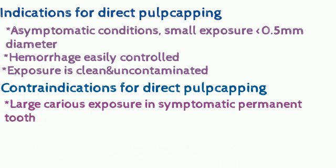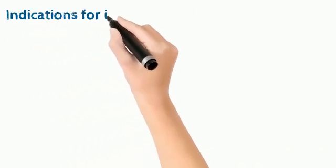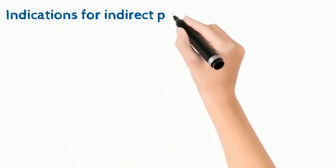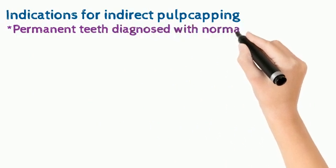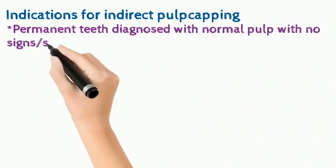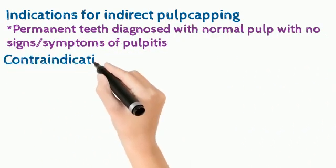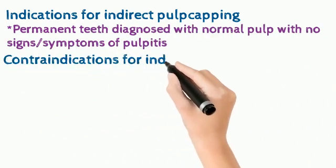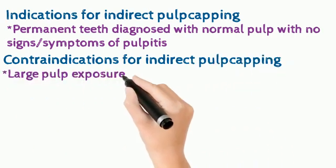Now let's go into indications for indirect pulp capping. Permanent teeth diagnosed with normal pulp with no signs or symptoms of pulpitis. Contraindications are large pulp exposure, non-restorable tooth, or tooth with low prognosis.